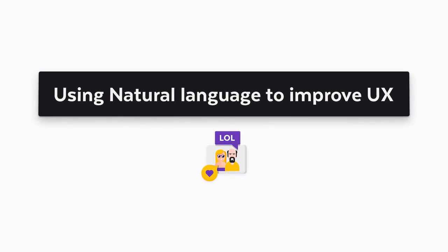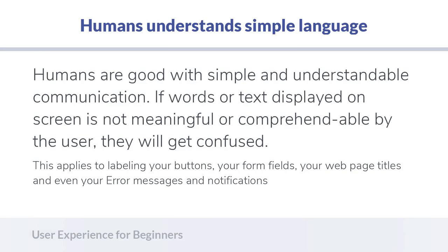Most humans understand simple language. If the words or text displayed on the screen — or the title of your button — is misunderstood by your user, it will lead them to an undesirable result. You need to make sure you are labeling your buttons correctly, using correct labels for your form fields, titling your web pages correctly, your blog posts, and even your error messages and notifications.